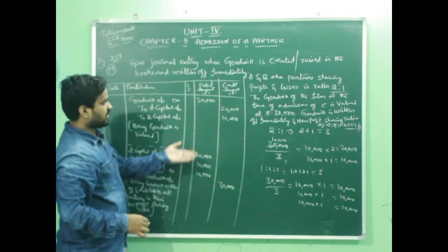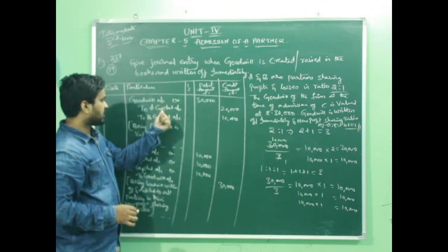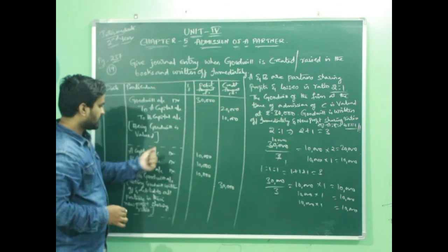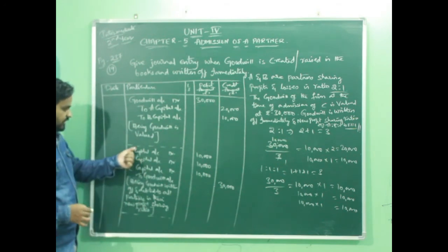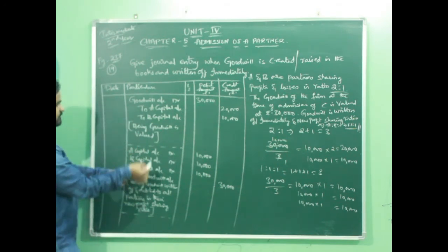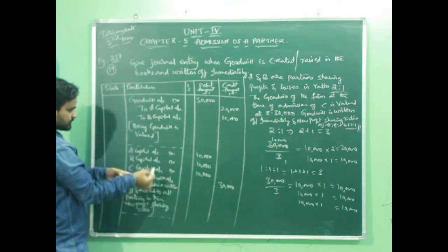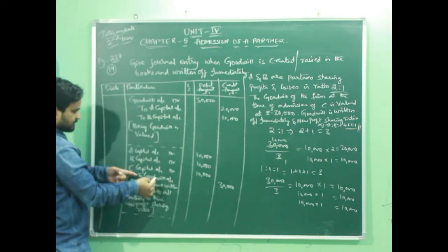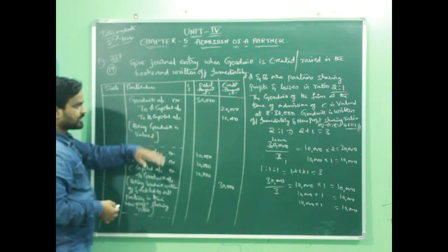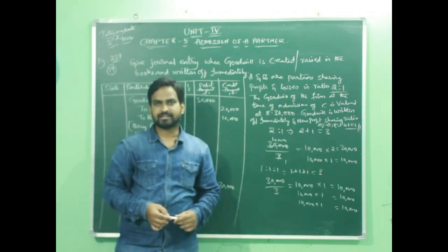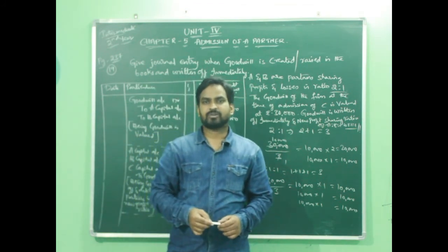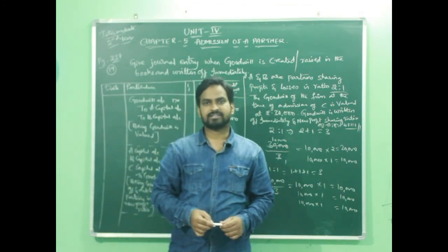Remember that when you are valuing goodwill, it should be distributed among old partners in their old profit sharing ratio. And when you are writing it off, it should be distributed to all partners in their new profit sharing ratio. When you are valuing goodwill, goodwill account is debited and capital accounts are credited; goodwill will be shown in the new balance sheet on the asset side. But when you are writing it off, goodwill will not be shown in the new balance sheet asset side.